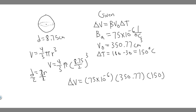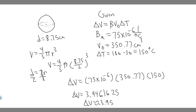Going ahead and computing 75 times 10 to the minus 6, multiplied by 350.77, and then multiplied by 150, what you get is 3.946 and so on — so approximately 3.95. The units: inverse degrees Celsius and degrees Celsius cancel, leaving centimeters cubed. So the change in volume is equal to about 3.95 centimeters cubed.